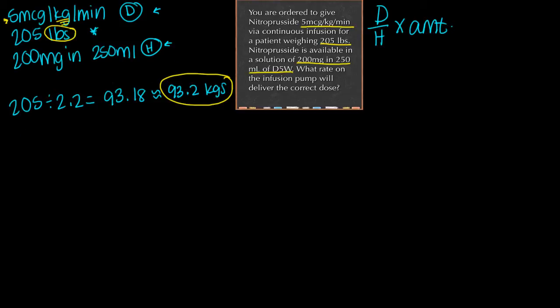Now I have the kilograms and I'm in good shape. I can start to work on this problem now. I know I'm going to give 5 mcg for every kilo the patient weighs. The patient weighs 93.2 kilos, so I'm going to multiply 5 by 93.2 and I'm going to get 466 micrograms.